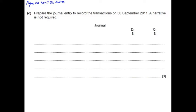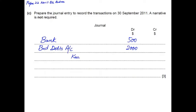For Part C, we need to make the journal entry. Kira has paid $500, so bank account is debited — bank is an asset and when an asset increases it is debited. Bad debt account is debited for $2,000, as that is the amount we will not receive. Kira's account is credited by $2,500 altogether to close it. This is a compound entry — one credit and more than one debit.